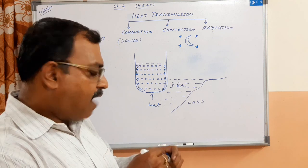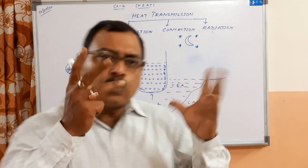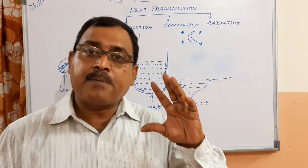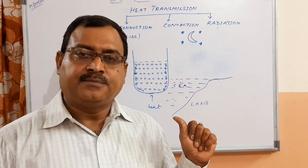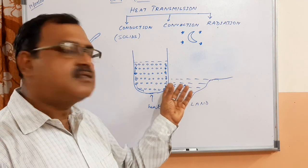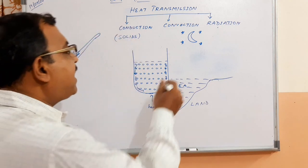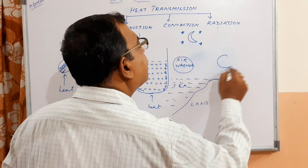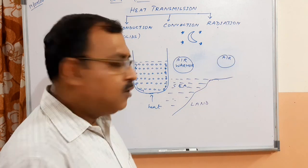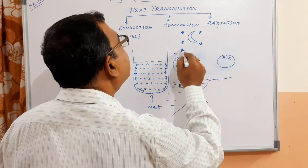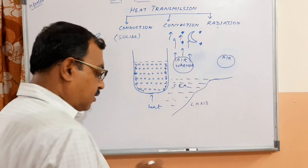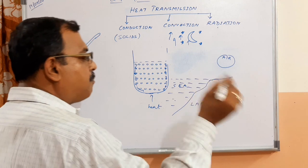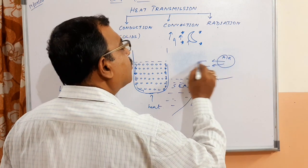At night, after sunset, the land starts cooling very fast and becomes cold. On the other hand, the water in the sea is comparatively warmer. So the air above the sea is warmer than the air above the land. This warm air is lighter, so it starts rising upward, and a low pressure zone is created over the sea. Comparatively cold air from the land rushes towards the sea.